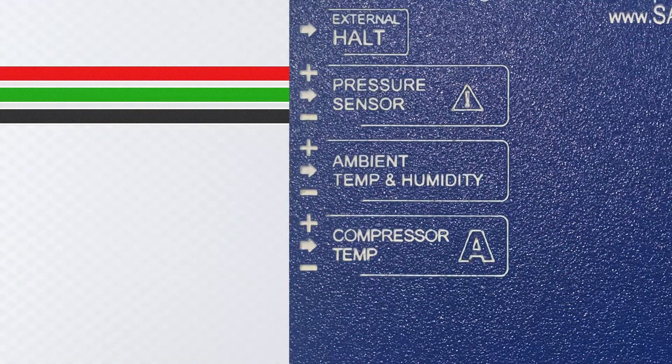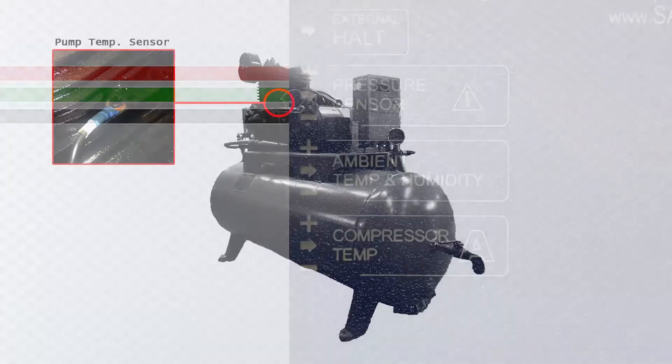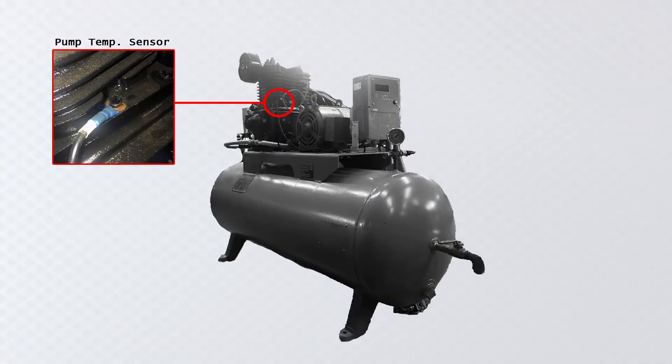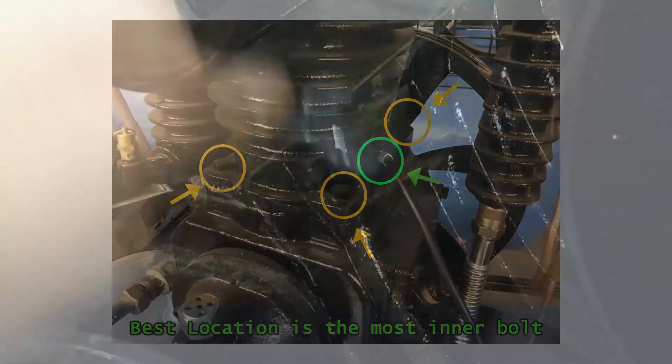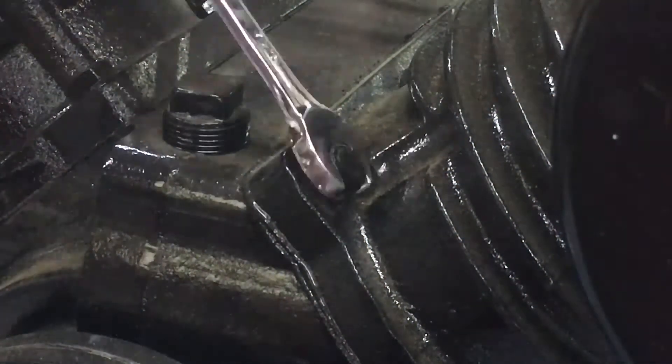The last step in setting up the compressor controller is connecting the pump temperature sensor. The sensor should be connected to the closest bolts where the pump meets the pump housing. On this compressor, any one of these four bolts will do. We'll unscrew the bolt and fit the temperature sensor much like a washer and tighten the bolt.